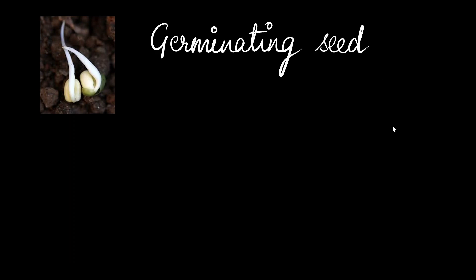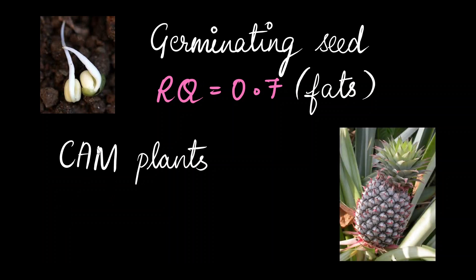The germinating seed has an RQ value of 0.7. And from what we have seen before, we know fats are being broken down. If you look at the example of CAM plants, it's quite interesting. So, we know that CAM plants have completely different metabolisms during the day and during the night.